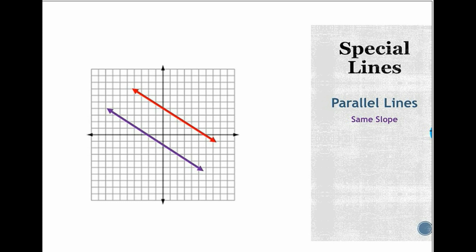Let's get started with talking about parallel and perpendicular. Let's start with parallel — looking at an image real quick. This right here is a set of parallel lines. Notice they're both slanted the same way. One special thing about parallel lines is that they have the same slope. If you find the slope of one line, the next line will be the same — same steepness, same slope.